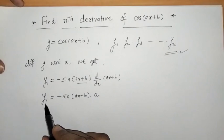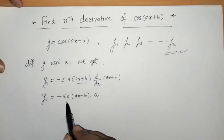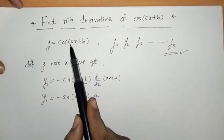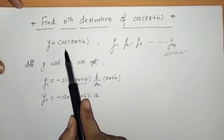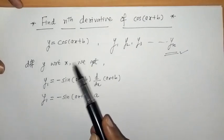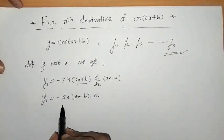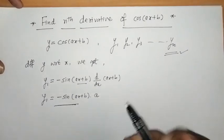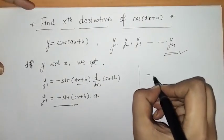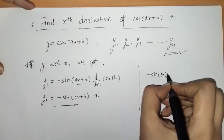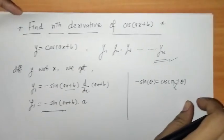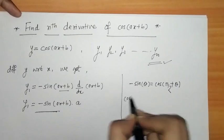We can check that when we differentiate y1 we get y2 with cos, and in y3 we will get sin. That means, when we differentiate y with respect to x, we are getting alternating sin and cos terms. To make a generalization, we have to write this minus sin in terms of cos, and for this we use the identity: -sin θ = cos(π/2 + θ).